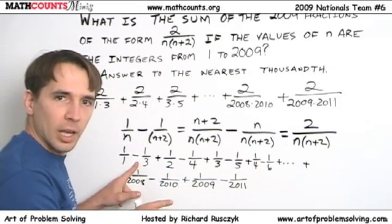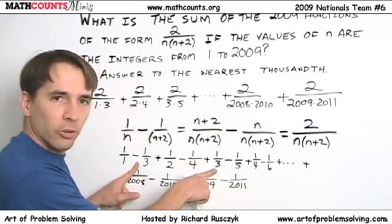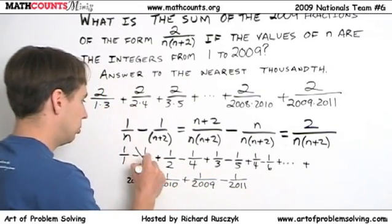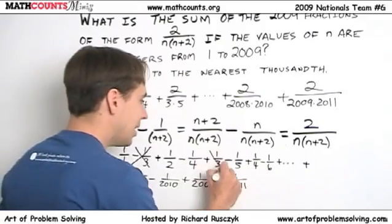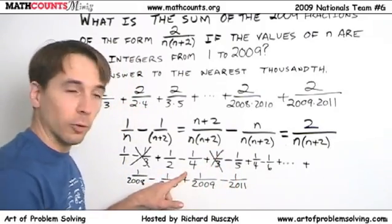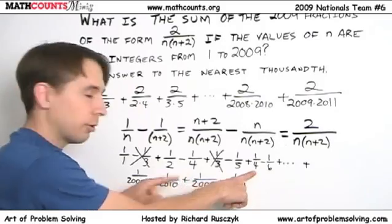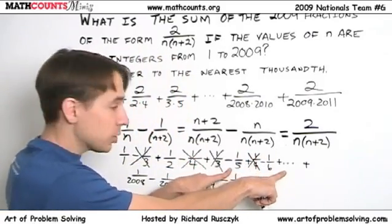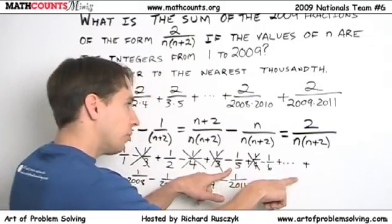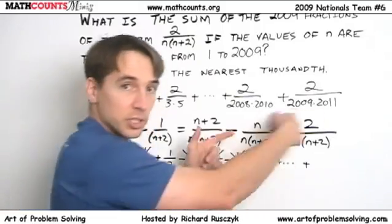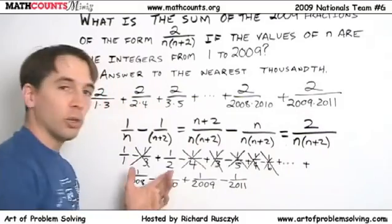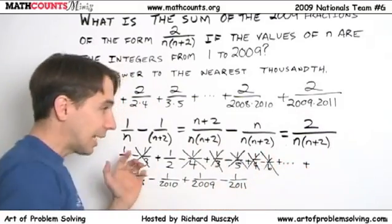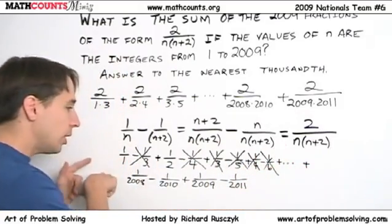I've got a minus 1 third and a plus 1 third. We can just cancel those. I've got a minus 1 fourth and a plus 1 fourth. We can cancel those. I've got a minus 1 fifth and my next term here, we'll have a plus 1 fifth. My minus 1 sixth is going to cancel with a plus 1 sixth. And look at that.